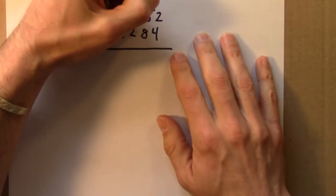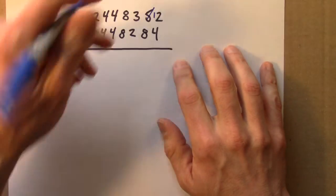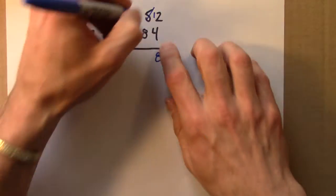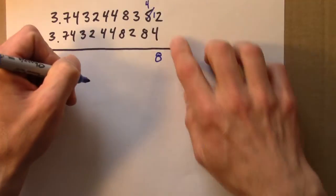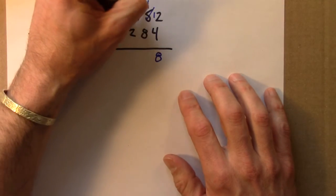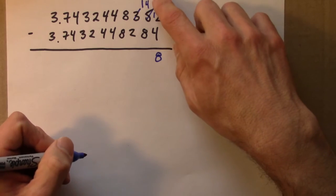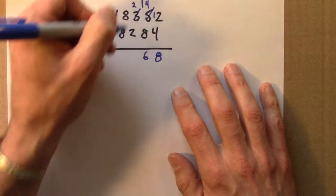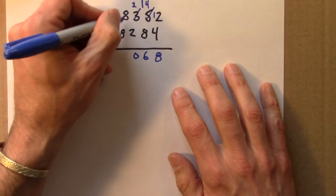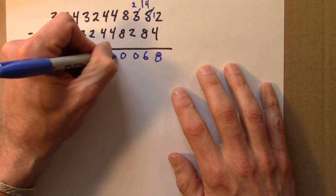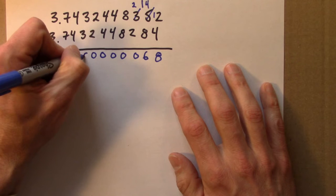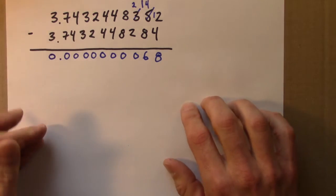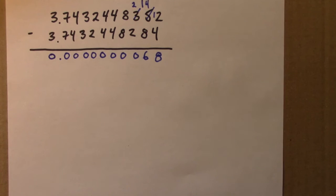2 minus 4, I need to borrow a 1. 12 minus 4, let's see that's 8. And that 5 turned into a 4. 4 minus 8, I need to borrow a 1. Let's see, 14 minus 1 is a 6. And then I've got 2 minus 2 and lots of zeros. So that's a very, very small number.